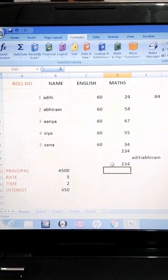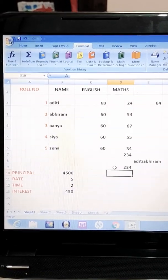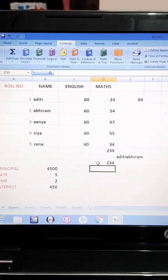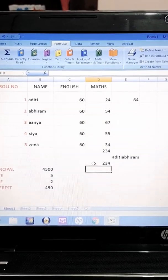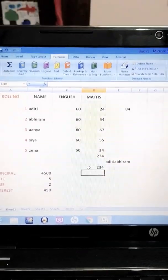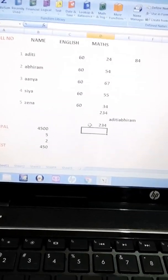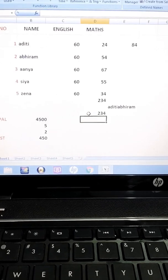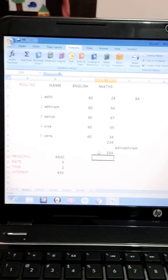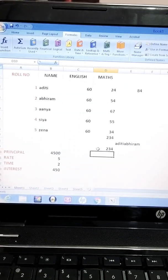Next is cell reference and its types. There are three types: relative reference, absolute, and mixed. That we will continue in next chapter, in next series. Thank you.